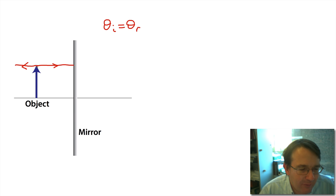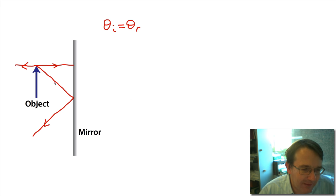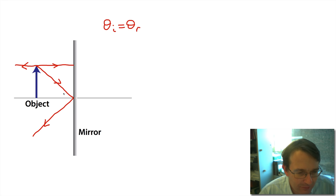The next ray goes from the top of the object down to the bottom of the object, along what we call the optical axis. For a lens or curved mirror, this would be along the axis of symmetry; for a plane mirror, we could draw this line anywhere. This ray reflects off the mirror and goes out the other way. We could add any number of rays, but we'll stick to these two principal rays.